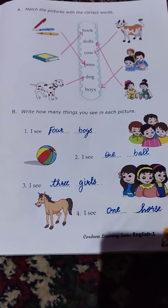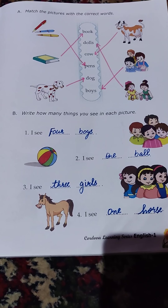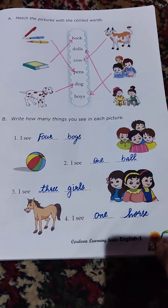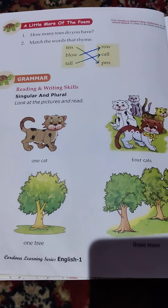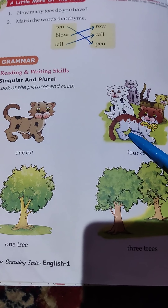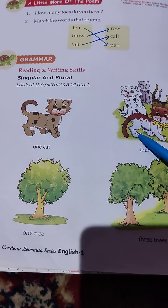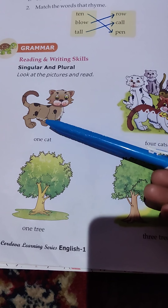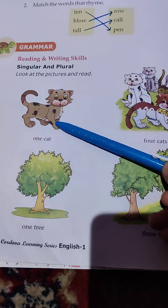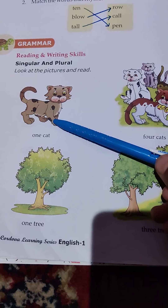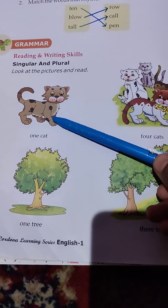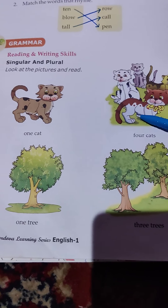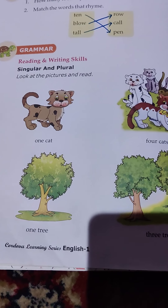My dear students, this was about the concept of singular and plural. I hope you all understood. To recapitulate: singular means the object which is one in number, one quantity; and more than one object is called as plural. Thank you.